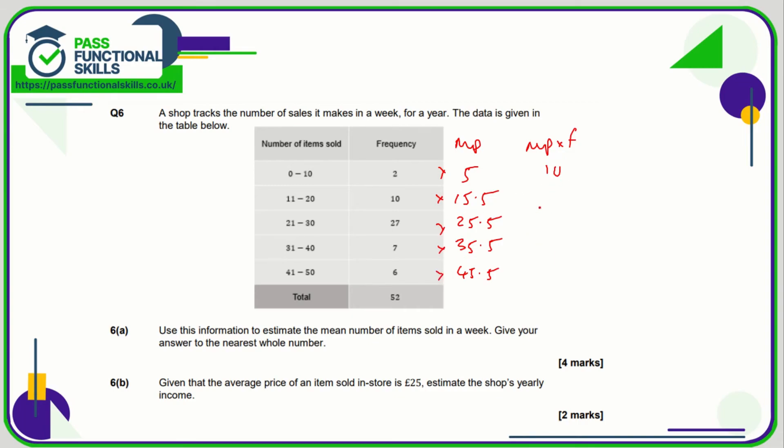Just continue down this column doing the same thing. 10 times 15.5 is 155. Next number is going to be 688.5, 248.5, and 273.